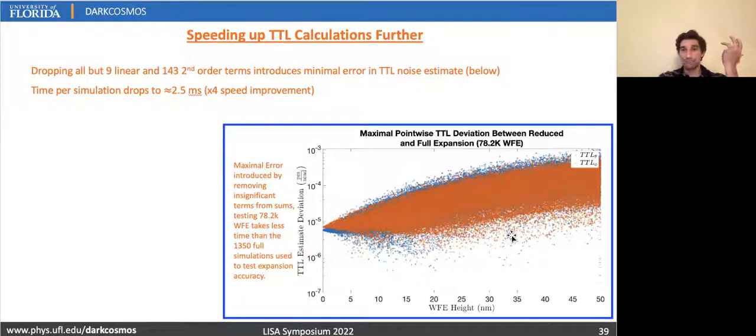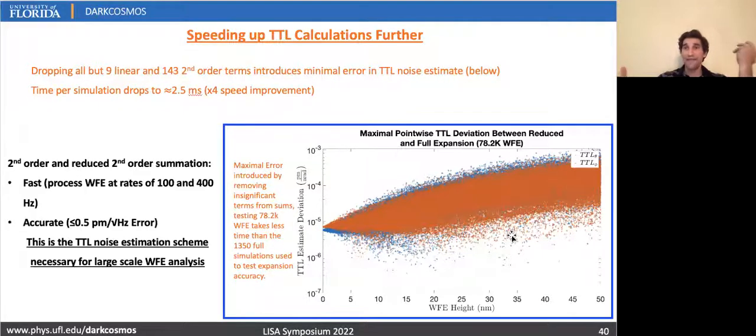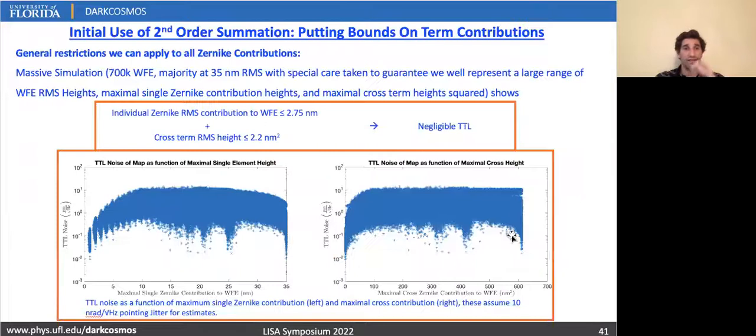And the whole reason for doing that is that it speeds up our simulations by a factor of four, so 2.5 milliseconds per map, but either of these are extremely fast. And they're also very accurate. These are exactly the types, this is exactly what we're looking at. These are the fast, accurate enough simulations that we can really thoroughly delve into how wavefront error is connected to far-field tilt length coupling.